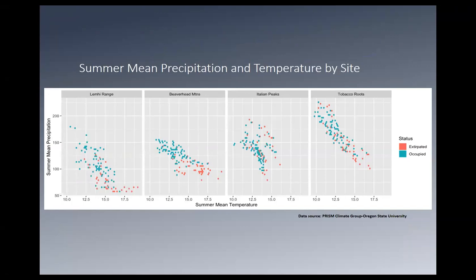Looking at all surveyed patches: on the x-axis is summer mean temperature (hotter to the right), and on the y-axis is summer mean precipitation at that individual site, pulled from PRISM. As you move to the bottom right — hotter and drier — patches are more likely to become extirpated. The red represents extirpations and blue is still occupied. We see a clear trend: the hotter and drier, the worse off it is for pikas, as they shift to cooler, wetter conditions.